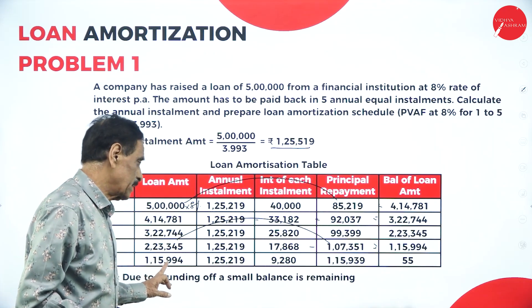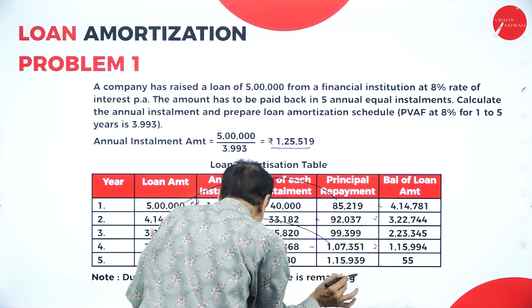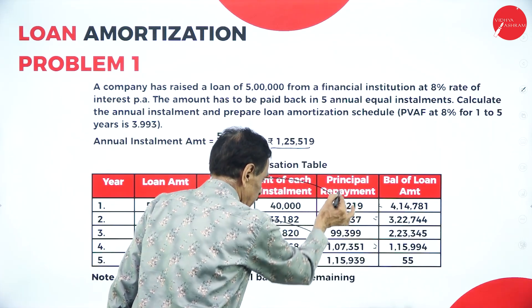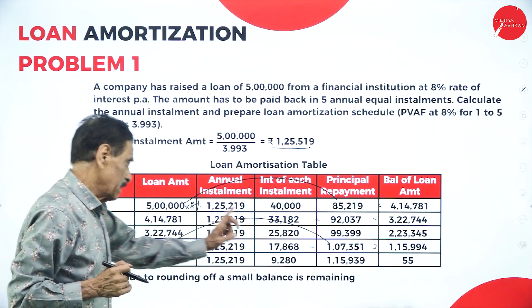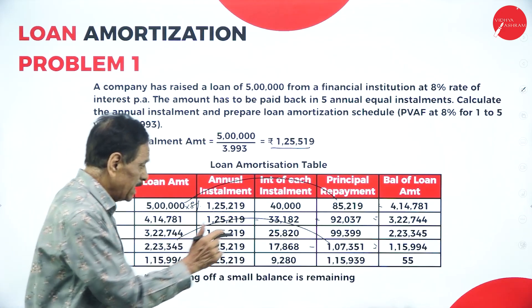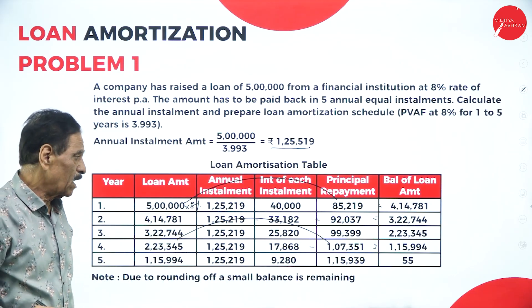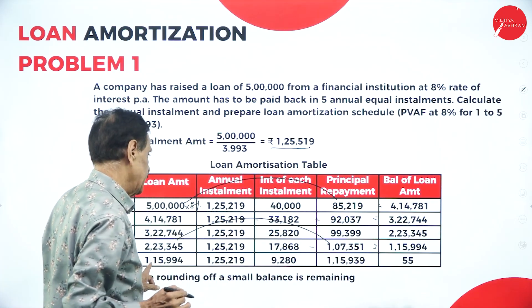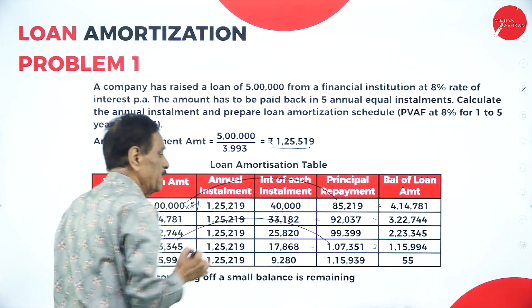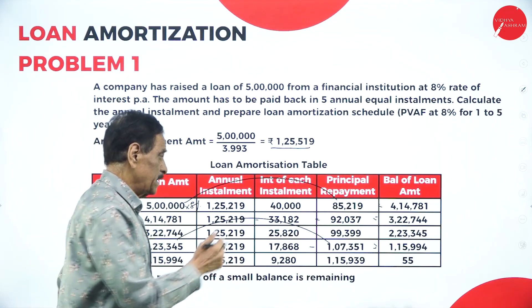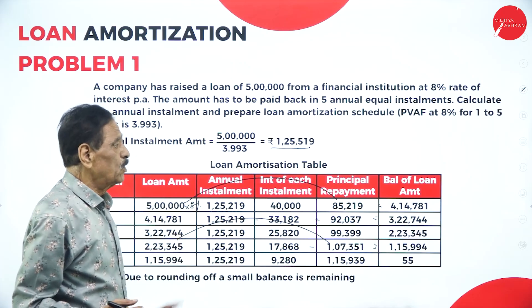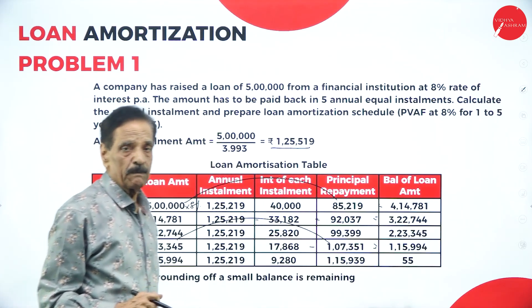The balance is 1 lakh 15,994. In the final year, whatever amount remains — 1 lakh 15,994 — that is what you have to pay as principal. Your installment is 1 lakh 25,219; whatever the difference comes will be the interest. There is a minor rounding difference of 55. For the last installment, directly write the repayment of the full remaining principal. The difference between the installment and the principal will be the interest.